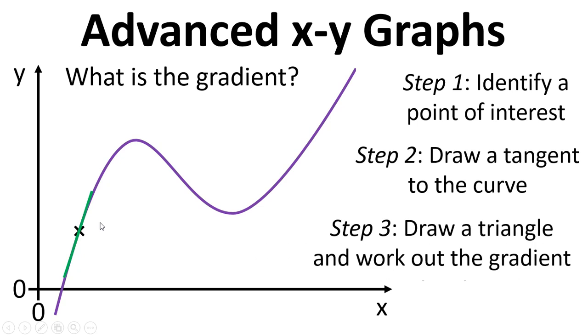Thirdly, we draw a triangle, and that then allows us to work out the gradient because then we can work out dy by dx. So we can see the change in y, the change in x, and then dy divided by dx gives us the gradient at that point. We can then identify other points.